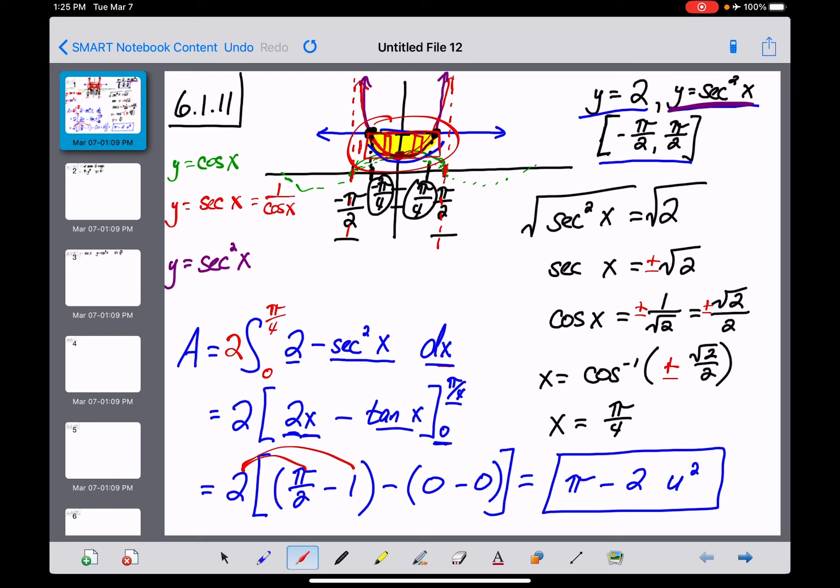If I think about this region as a rectangle, it has a height of 1, going from 1 up to 2, and a width of pi over 4 times 2, which is pi over 2. So the area of the rectangle would be pi over 2, or about 1.5.